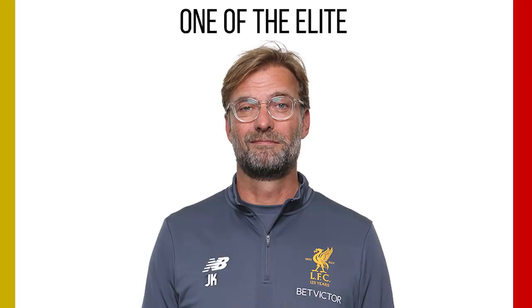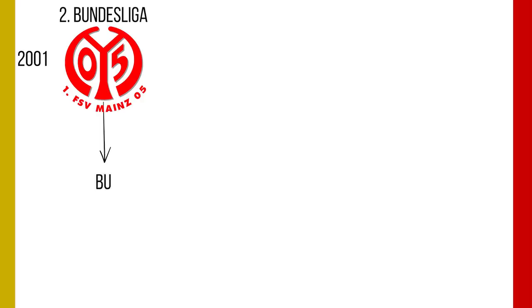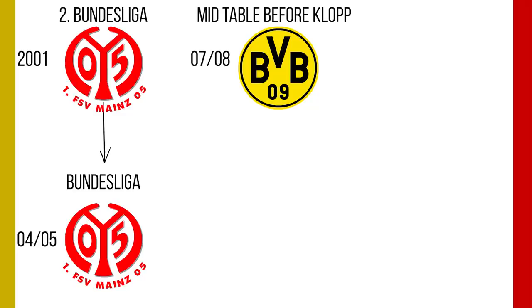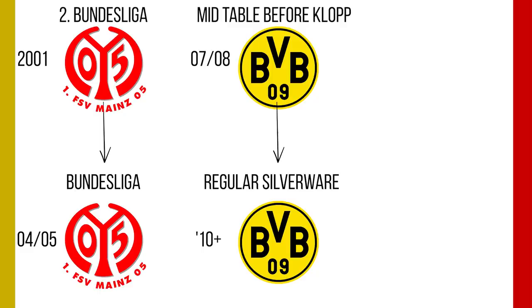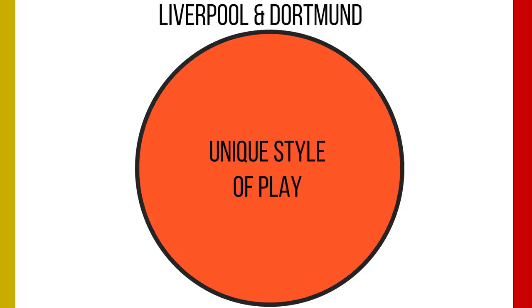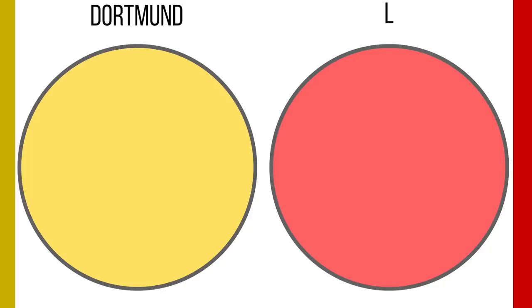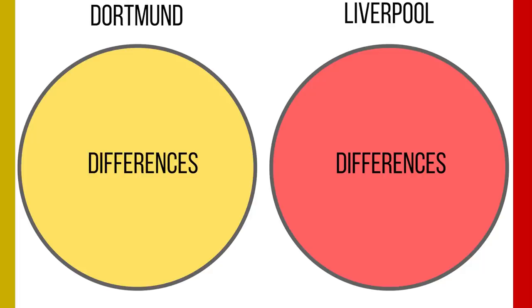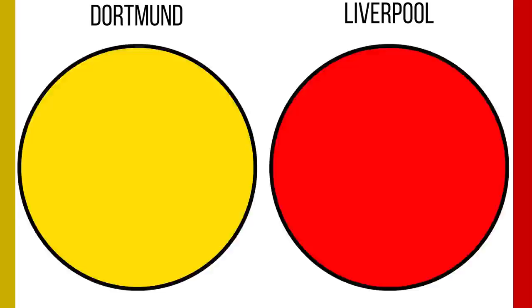Welcome back to Football Made Simple. Jürgen Klopp is undoubtedly one of the best managers in the world. He took Mainz from the Zweite Bundesliga to the Bundesliga for the first time in their history. After moving to the Westfalenstadion, he took a sleeping giant from mid-table to consistent silverware in a few seasons. He later repeated the trick, taking another sleeping giant in Liverpool back to their previous heights. In this video, we look at the differences between his Liverpool and Dortmund tactics and how the evolution progressed.